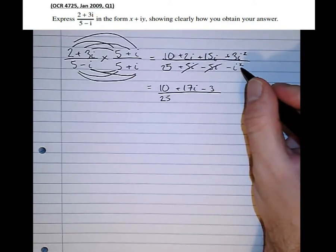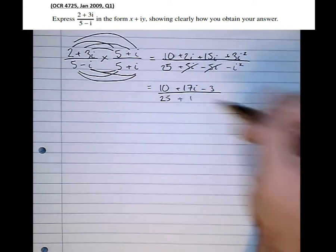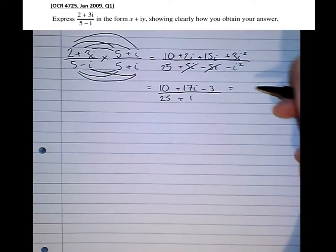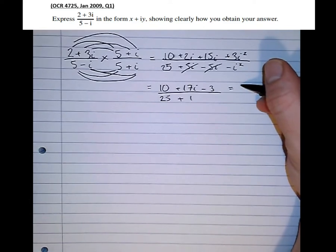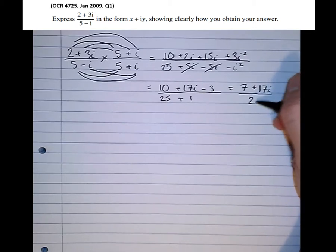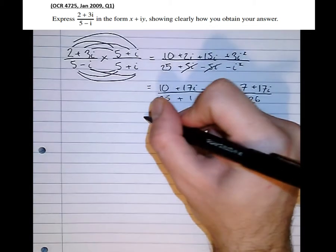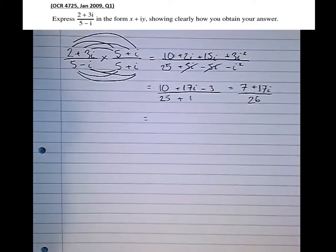So minus minus 1 plus 1 equals 7 plus 17i over 26. Then simplifying it to the desired form,